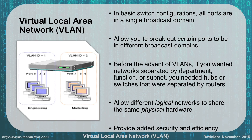As you can see in this example, we might have two departments like the engineering department and the marketing department, and we want to keep their network traffic separate. So we can assign different ports to different VLANs. In this case, we have ports 2, 3, and 5 on the engineering VLAN, and we have ports 4, 6, and 7 on the marketing VLAN.